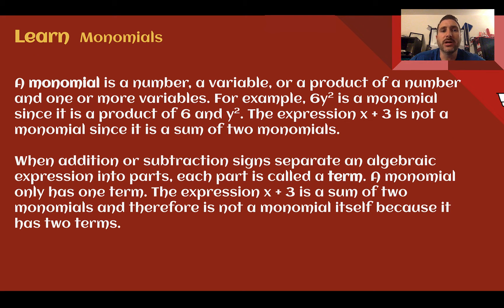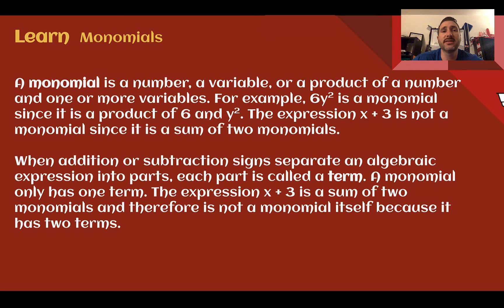Monomials. A monomial is a number, a variable, or a product of a number and one or more variables. For example, 6y squared is a monomial, since it's a product of 6 and y squared. The expression x plus 3 is not a monomial, since it's the sum of two monomials. The key here: monomials are only dealing with multiplication. If we're adding, subtracting, or dividing, it's not going to be a monomial.